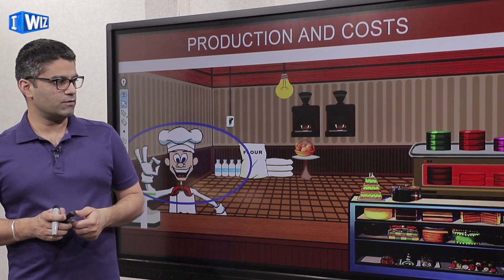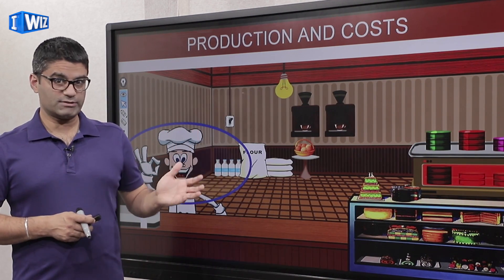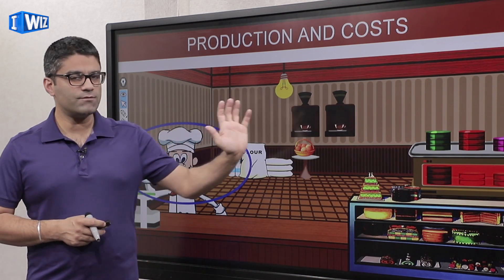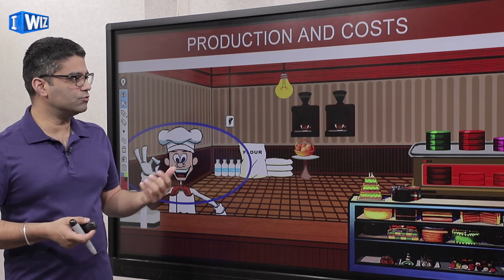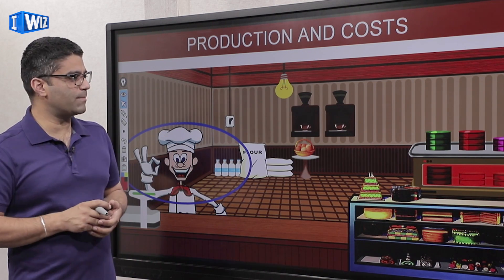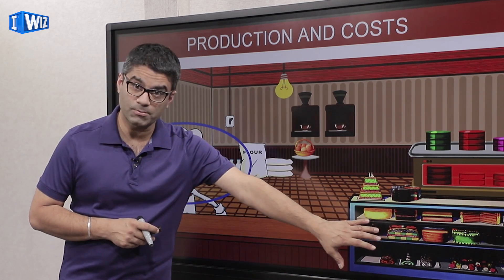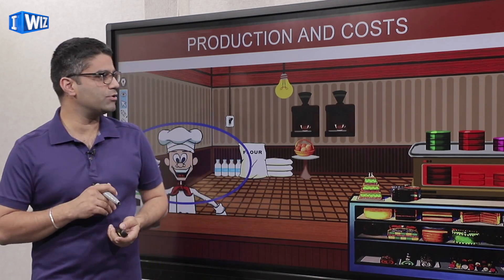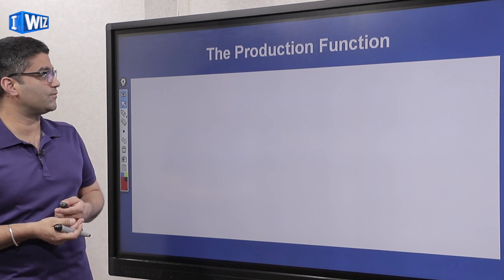What we assumed in the previous video, and I'm going to continue with that, is when we talk about total product, average product, and marginal product, we keep every input fixed except one — and the one I've chosen to vary is labor. So as the owner of the bakery, as you hire more people, how much more output can you produce given these fixed inputs?